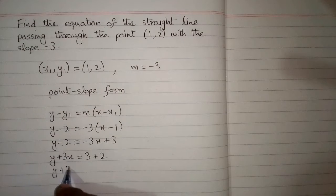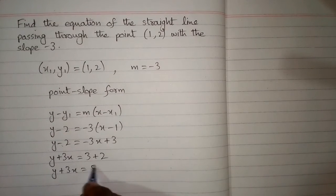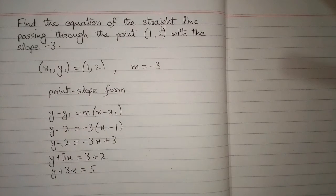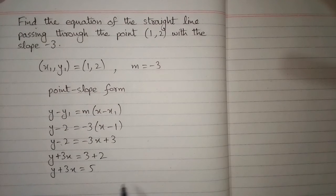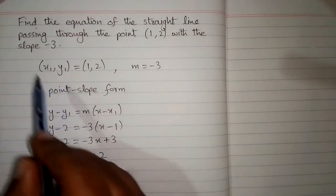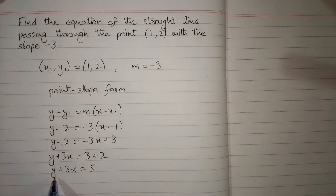So we have y plus 3x is equal to 3 plus 2 is 5. So the equation of the straight line passing through the point 1 comma 2 and the slope minus 3 is y plus 3x is equal to 5.